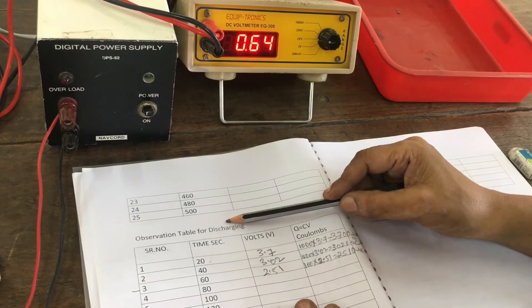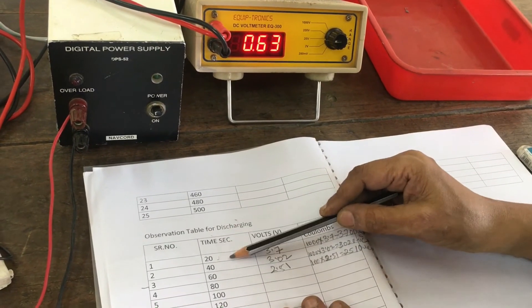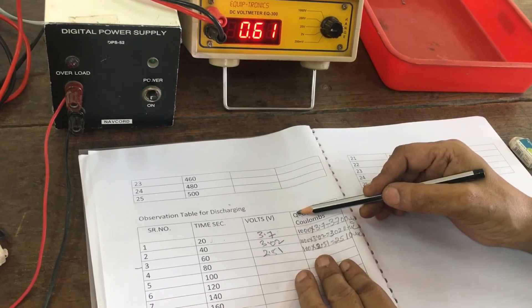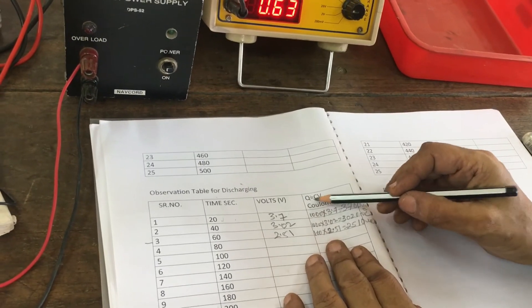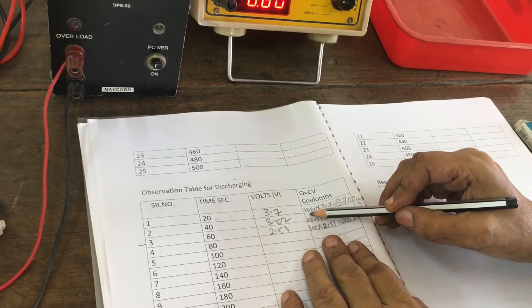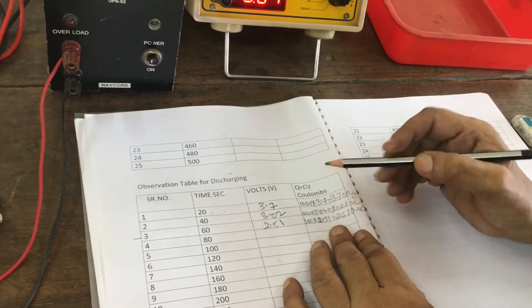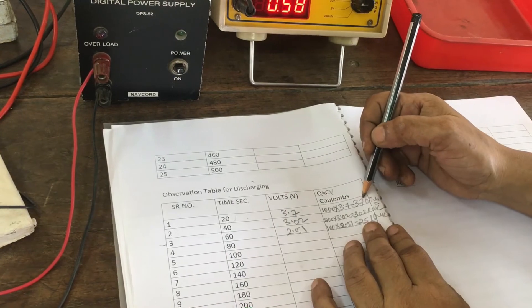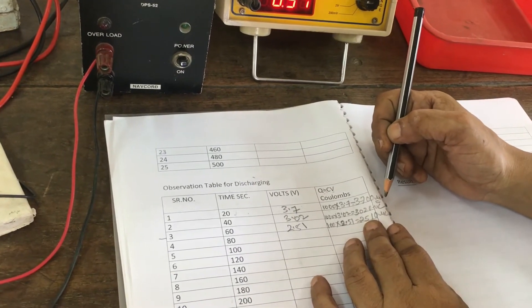This is the table for discharging. See, here time is 20 seconds. The voltage may be 3.7 volts. Q is equal to charge. The calculation is C into V. C means 1000 microfarad capacitor and voltage may be 3.7. Multiply both: 3700 microcolumns.